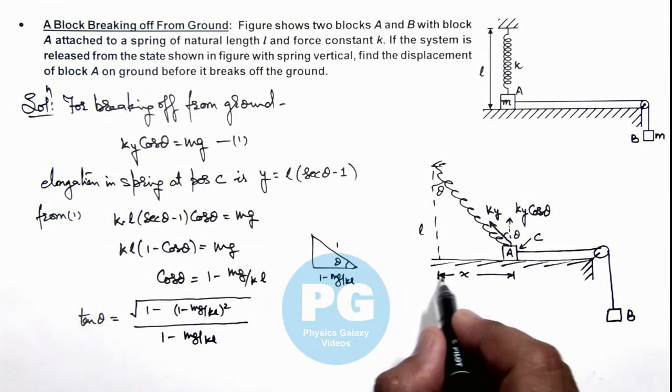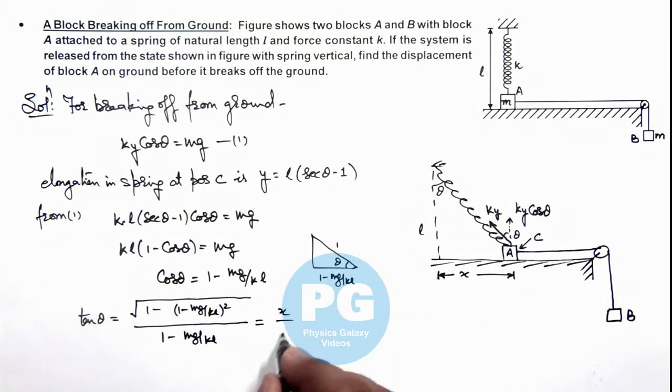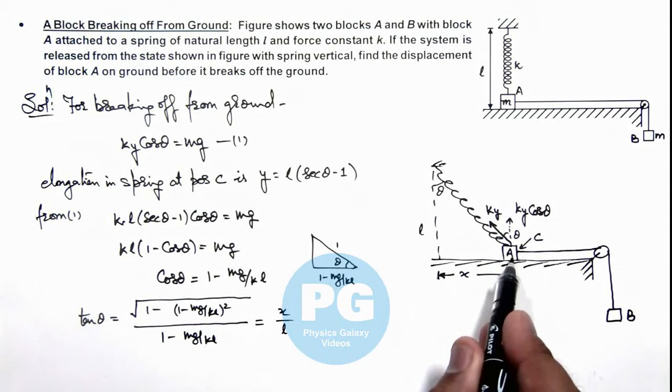We can directly get the value of x here, as tan theta can also be written as x by l, and here we are required to find the value of x, the displacement of block A when it breaks off.